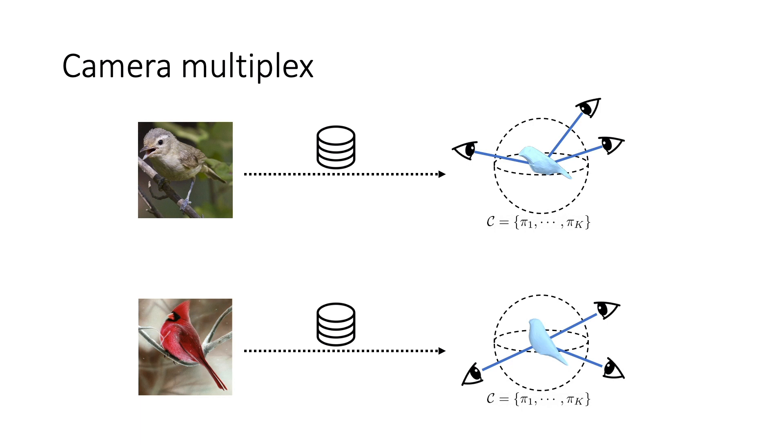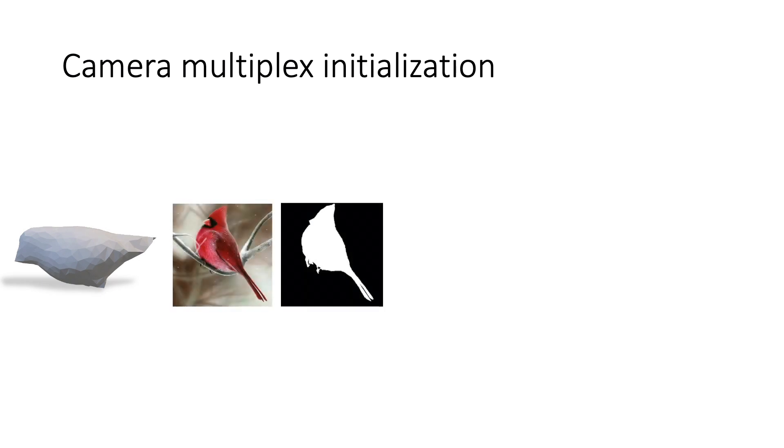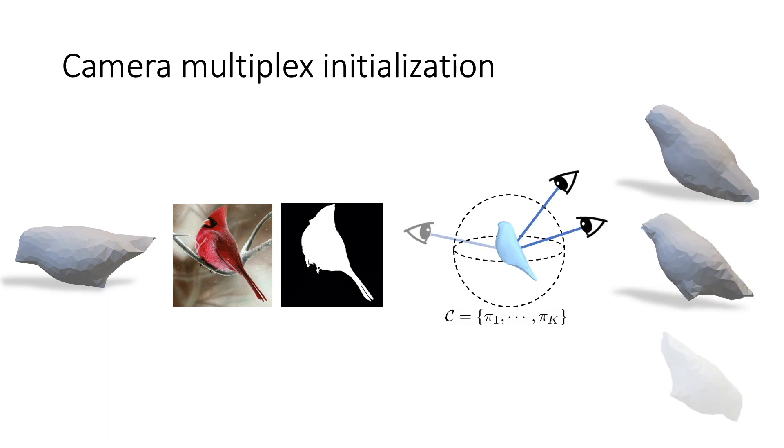Similar to prior work, the camera is weak perspective. Before training, we use the template shape and the silhouette to initialize the K cameras in the camera multiplex to views that explain the silhouette when rendered. We do so by optimizing the cameras to minimize a silhouette loss when rendering the template shape.